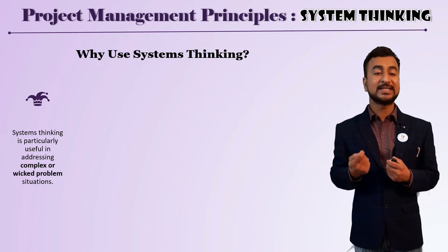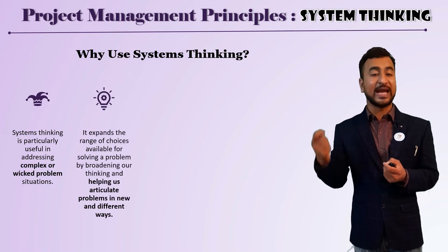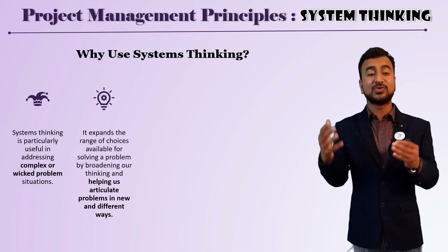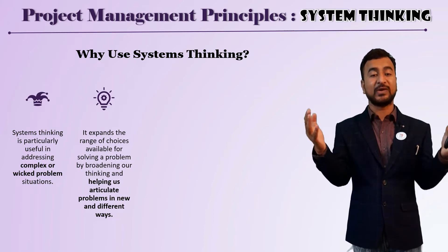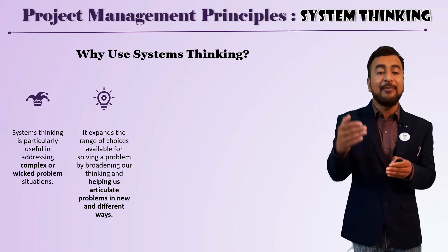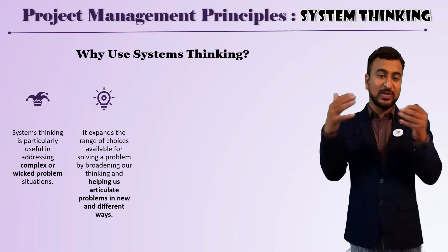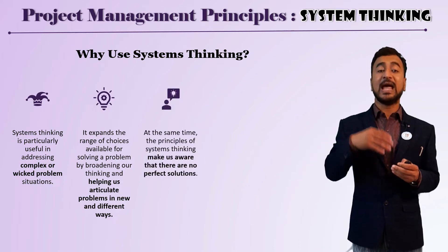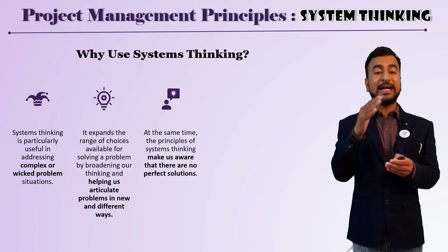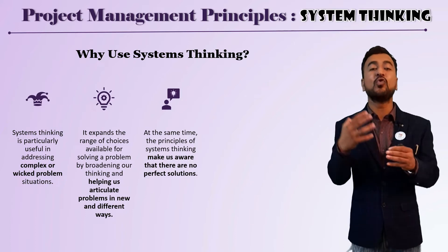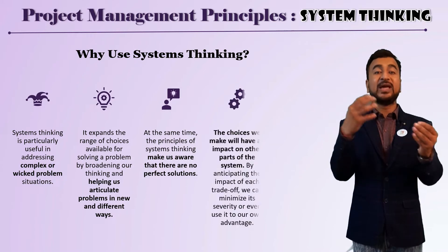Why do we use system thinking? The best example is that system thinking is used to solve complex or wicked problems. It expands your range of available choices and helps articulate the problem in new and different ways, so that you have bigger options available. At the same time, participants in system thinking are made aware that there are no perfect solutions — we have to work with the optimum solution available and cannot wait indefinitely.